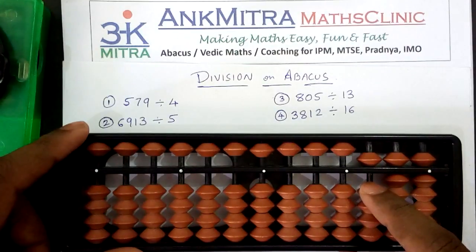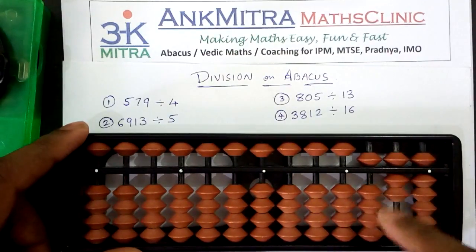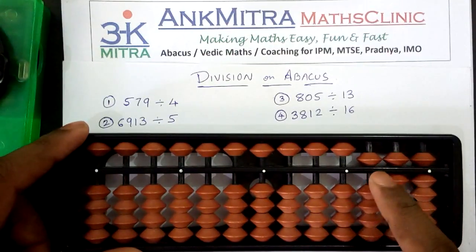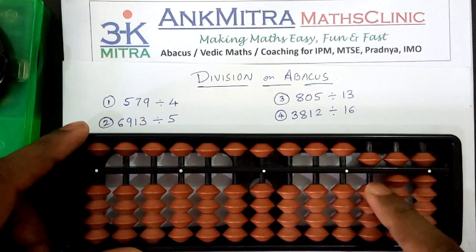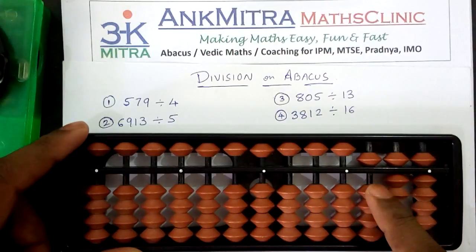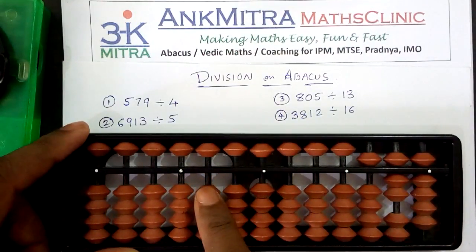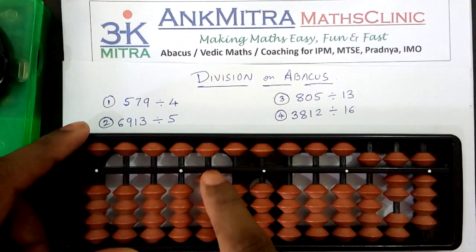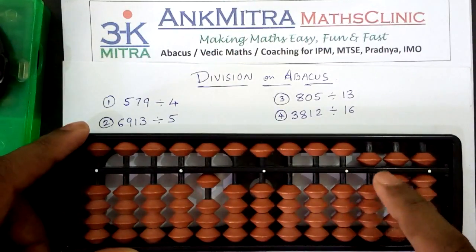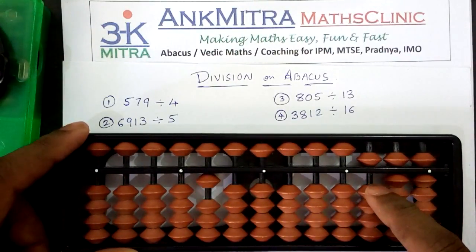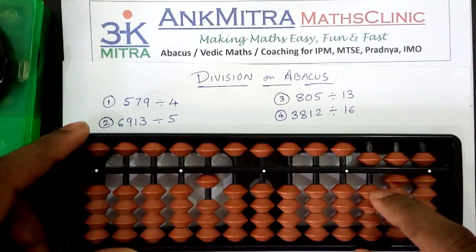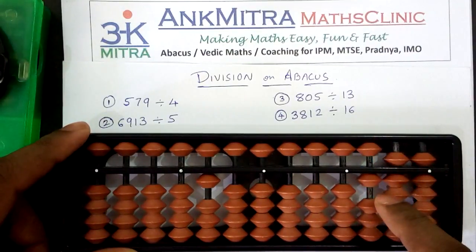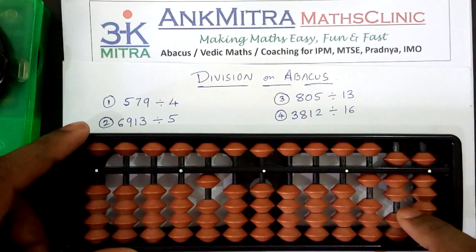We'll start with the leftmost rod on the question set, which is 5. Our divisor is 4, so we'll be reciting the table of four each time. The first number being 5, we can subtract one times four from this number. One will be taken on the exactly corresponding hundreds place of the answer set. One times four is four, so we'll subtract four from this five — plus one minus five, subtraction of four is done.